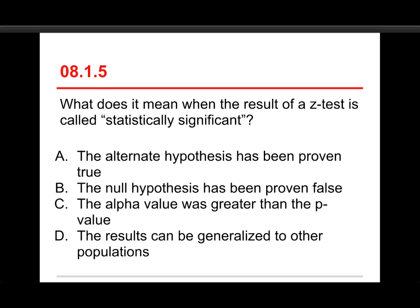Number five. What does it mean when the result of a z-test is called statistically significant? The alternate hypothesis has been proven true, the null hypothesis has been proven false, the alpha value was greater than the p-value, or the results can be generalized to other populations. The answer here is C, the alpha value was greater than the p-value. Of these four choices, it's the only one that's accurate.